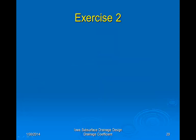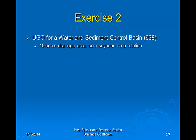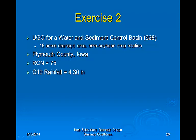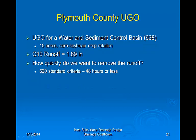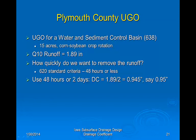Next, we determine the minimum capacity needed for an underground outlet for a water and sediment control basin. We have a drainage area of 15 acres in a corn-soybean rotation field in Plymouth County, northwest Iowa. The runoff curve number is 75, and using EFH2 software the Q10 rainfall is 4.3 inches and Q10 runoff is 1.89 inches. The CPS 620 standard requires stored water to be removed within 48 hours, so we divide the runoff by 2 to get 0.95 inches as the design drainage coefficient.